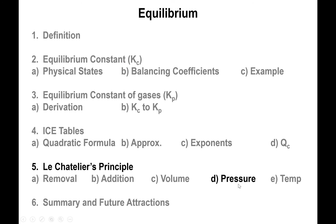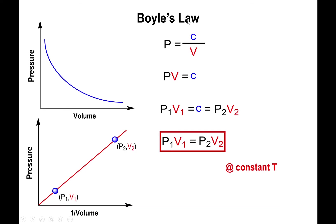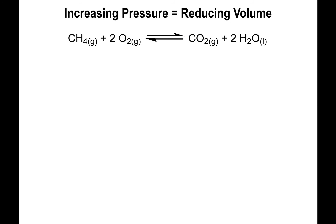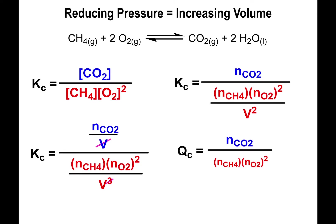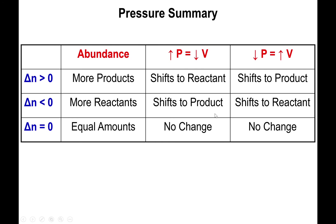Pressure is very similar to volume. By Boyle's Law, pressure is inversely related to volume: increasing pressure decreases volume, and vice versa. So the same parameters observed for volume apply here, just inverted. Increasing pressure is the same as decreasing volume; decreasing pressure is the same as increasing volume. The situation is essentially the same table as for volume, just with the pressure effect being the opposite of the volume effect.